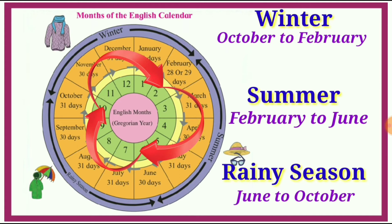Winter season कब start होता है? October से — October, November, December, January, and February. October से लेकर February तक winter season count किया जाता है.